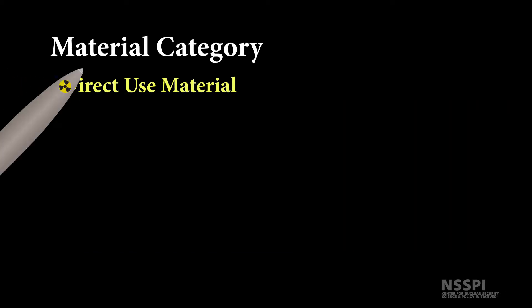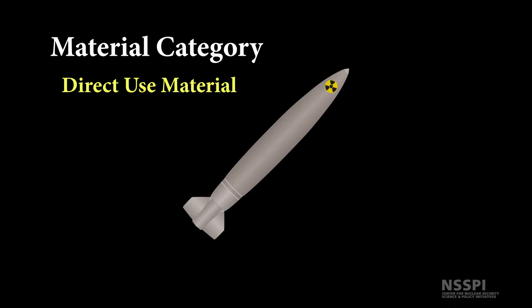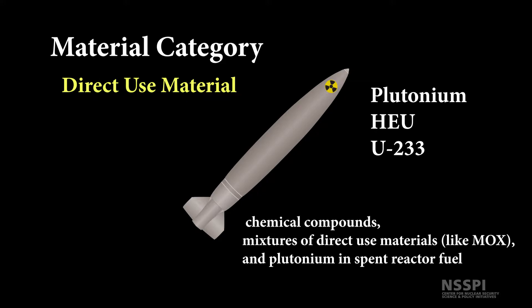Direct-use material refers to nuclear material that can be used for the manufacture of a nuclear explosive device without transmutation or further enrichment. This would be plutonium that contains less than 80% plutonium-238, highly enriched uranium, and uranium-233. This also includes chemical compounds, mixtures of direct-use materials such as mixed-oxide fuels, and the plutonium in spent reactor fuel. All of these are also considered direct-use materials.